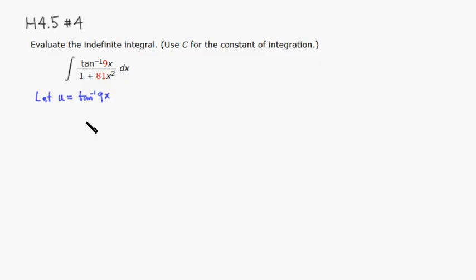If you take the derivative of that, you're gonna get du/dx is equal to... for arc tangent, you're gonna have 1 plus 9x squared, so it's 81x squared. And take the derivative of that, put it on top, so it's a chain rule, so it's 9.